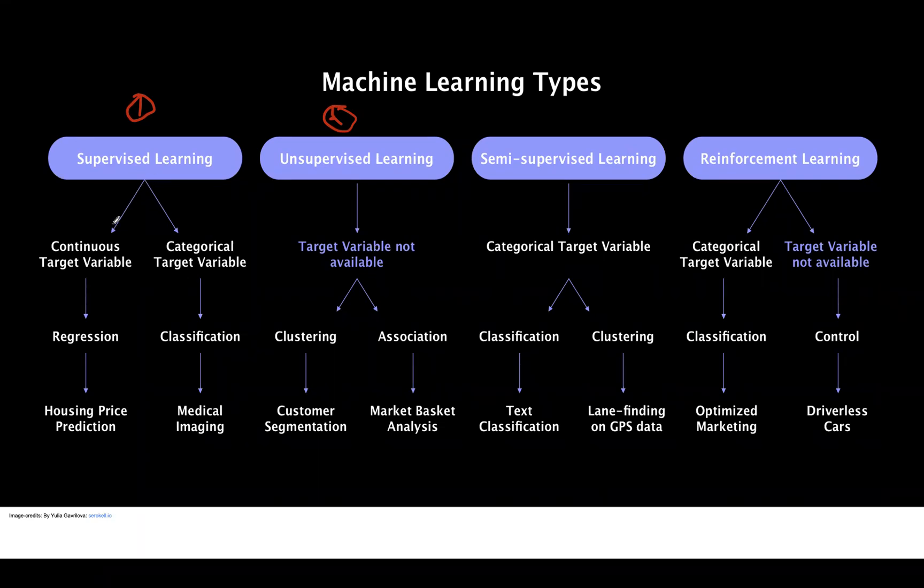We can further break it down into two. So here we have regression and classification. In classification, we are trying to solve a classification problem that has a categorical target variable. Here, the Y is actually nominal. While in a regression problem, we are trying to solve a regression problem or perform regression analysis where the Y is continuous, meaning that our dependent variable is numeric.